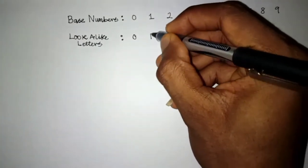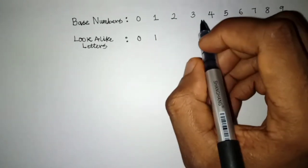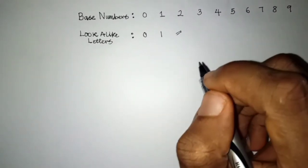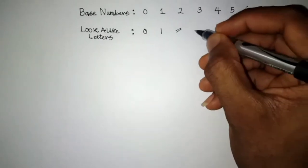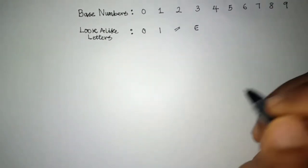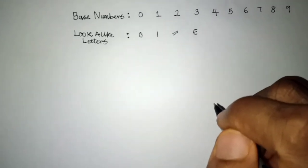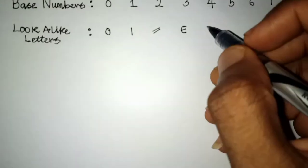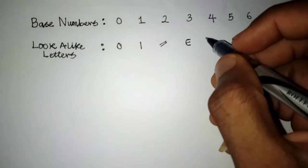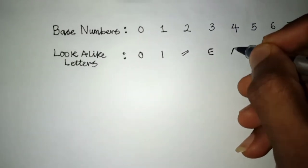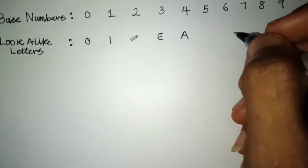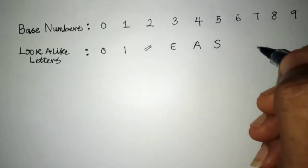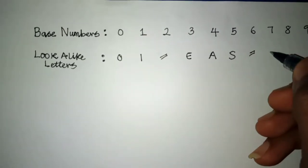What about two? I don't think any letter looks like two, so that's a tricky one. What about three? The capital letter E looks like the number three — it's just inverted. What about four? Nothing exactly, but in a way the capital letter A looks almost like number four. What about five? You guessed right — the letter S looks like number five.